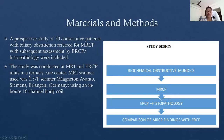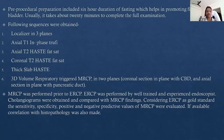For materials and methods: a prospective study of 50 consecutive patients with biliary obstruction referred for MRCP with subsequent assessment by ERCP and histopathology were included. The study was conducted at MRI and ERCP units in a tertiary care center. The MRCP scanner used was a 1.5T scanner using an in-house 16-channel body coil. Pre-procedure preparation included 6 hours of fasting, which helps in promoting the filling of the gallbladder. Usually it takes about 20 minutes to complete the full examination.